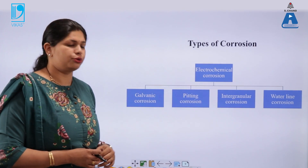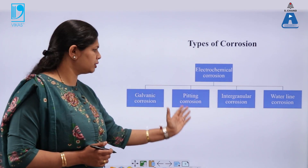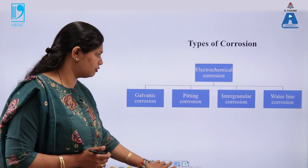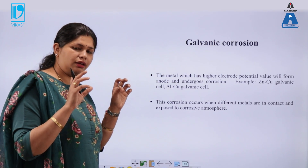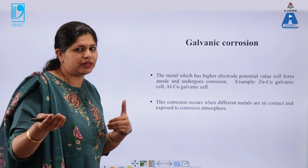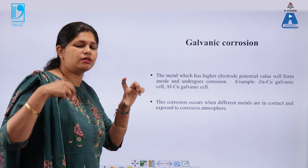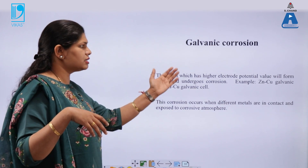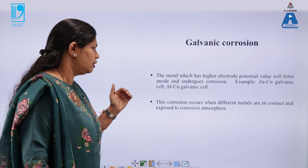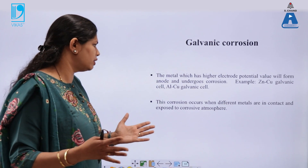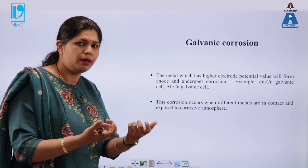What are the types of corrosion? As an electrochemical process, it is divided into four parts: galvanic corrosion, pitting corrosion, intergranular corrosion, and waterline corrosion. Galvanic corrosion is where one metal corrodes another, like in the Daniel cell where zinc and copper are used — copper gets deposited and zinc metal gets depleted. Aluminium and copper can also be taken together. This corrosion occurs when different metals are in contact and exposed to a corrosive atmosphere, with an electrolyte filling between the two metals.